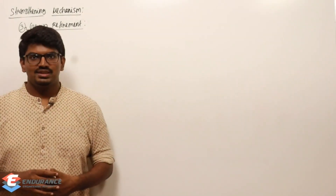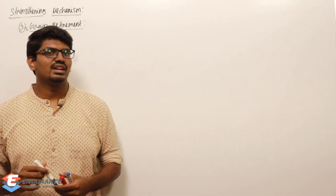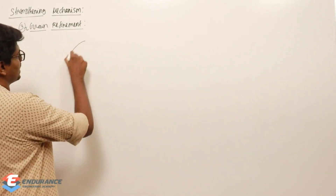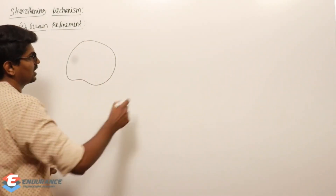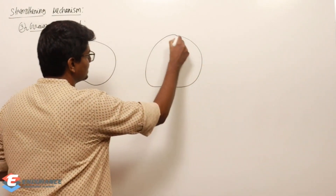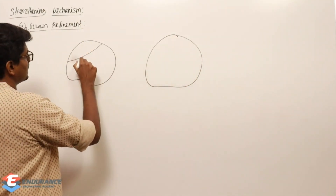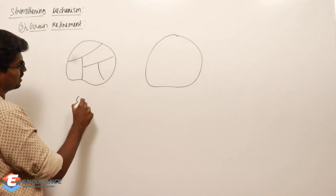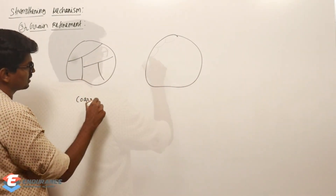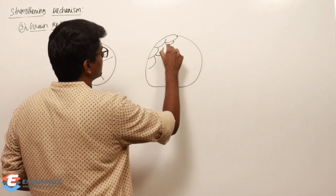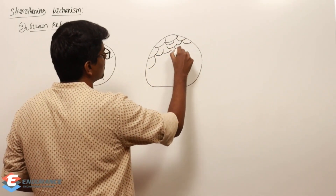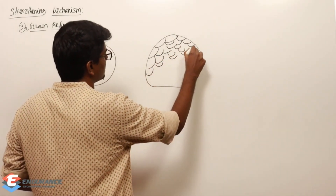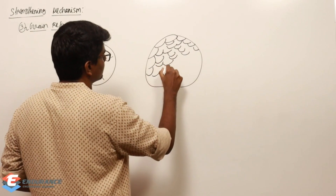Another way to increase material strength is grain refinement. There are two types of grain structures: if fewer grain boundaries are present, the material has coarser grains; if more grain boundaries are present, it has finer grains.